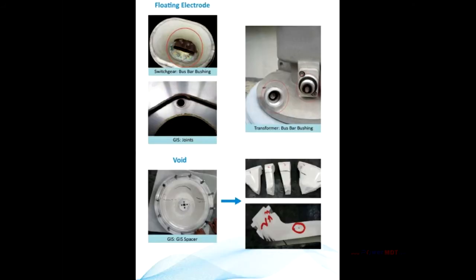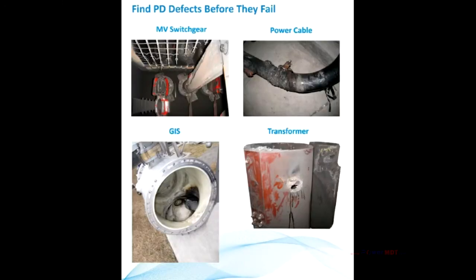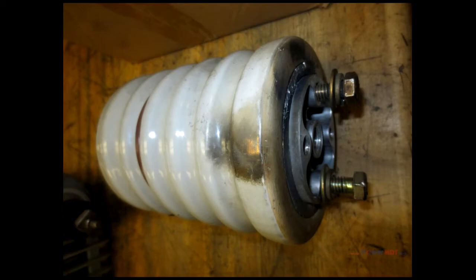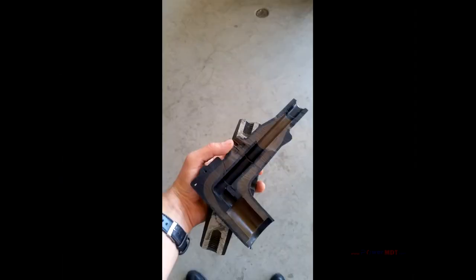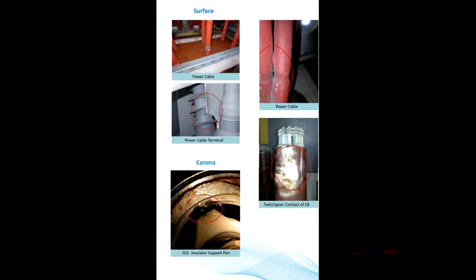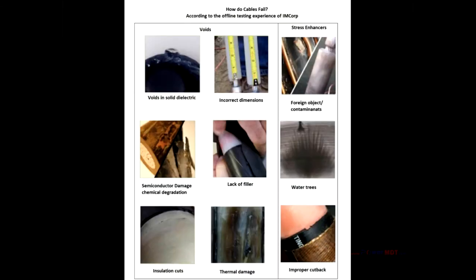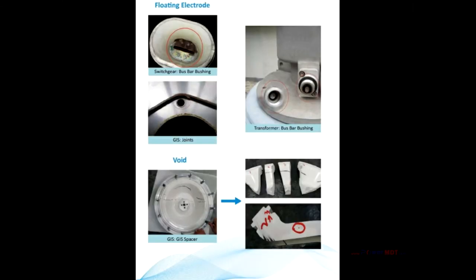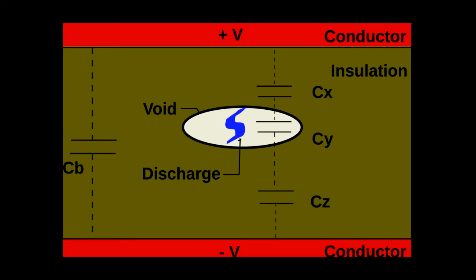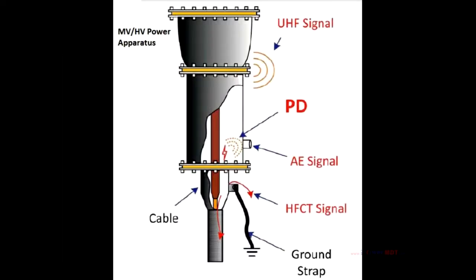Online PD testing detects and precisely locates insulation defects such as corona, surface tracking, arcing, voids, and floating electrodes. These issues are related to AC voltage stresses. In fact, partial discharges are completely driven by voltage and do not require a load or high current in order to become active.